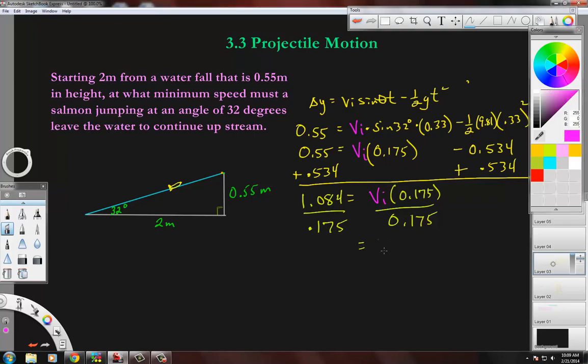So 1.084 divided by 0.175 is about 6.19. So maybe 6.2 meters per second would be the fish speed. And let's check that. And that's exactly right. This is how you would figure out a problem involving when you don't have a velocity. All right. You have a fine.